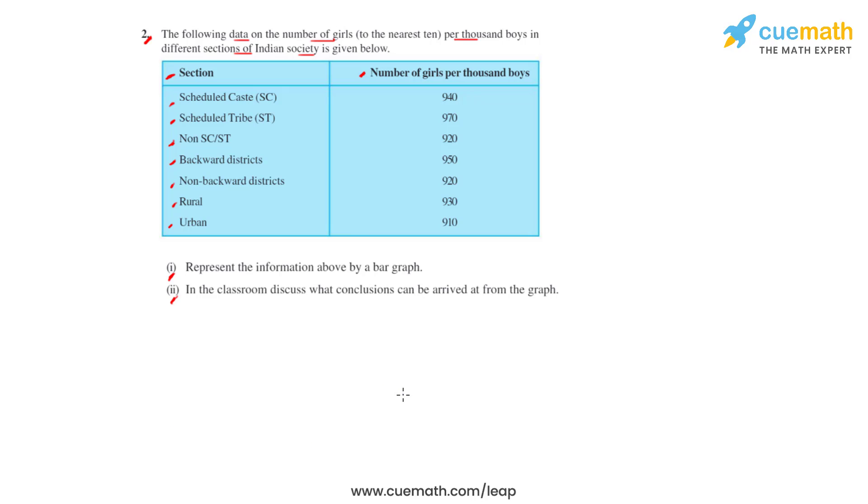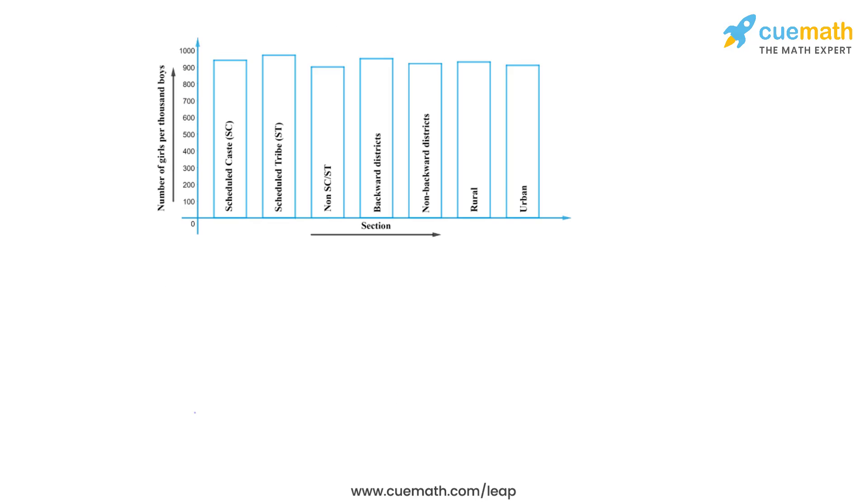The bar graph will look like this. In this given bar graph which we have drawn, we can see that we have represented the different sections of Indian society on the x-axis and the number of girls per thousand boys on the y-axis. We have chosen a scale of one unit being equal to one hundred girls on the y-axis. We've also maintained equal widths for each of the bars and maintained equal gaps between them.